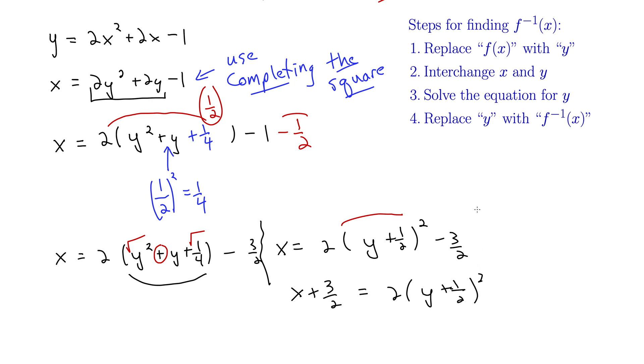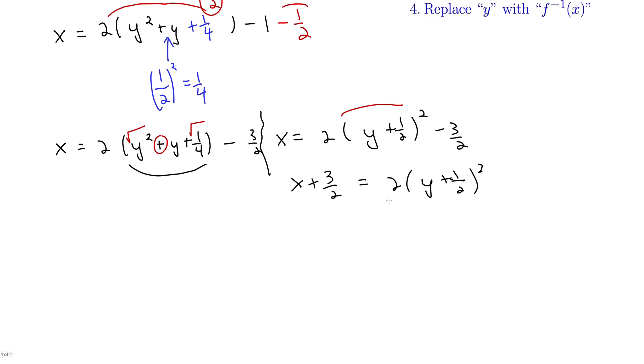Divide both sides by 2. That gives us x plus 3 halves over 2. So what I'm going to do here, we're starting to get a lot of fractions, I'm going to get a common denominator here on top. So I'm going to multiply this by 2 over 2. That gives us 2x plus 3 all over 2, all over 2 again equals y plus 1 half squared.